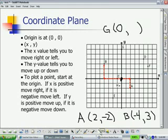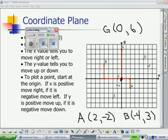And now we need to count how many points up it goes. So one, two, three, four, five, six. Six spaces up. So point G is located at 0, 6.